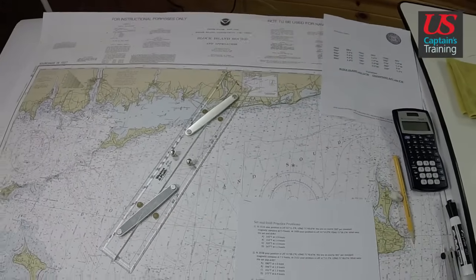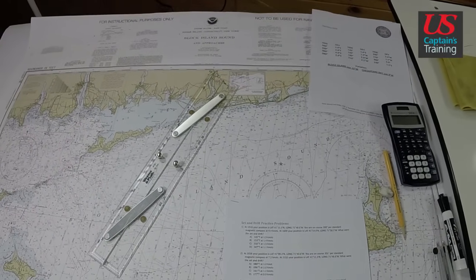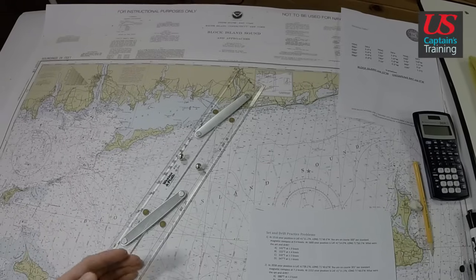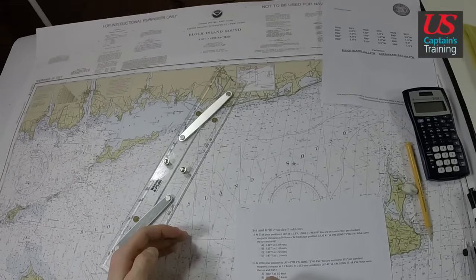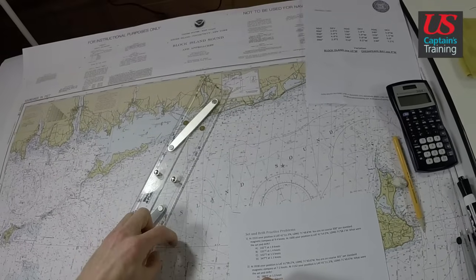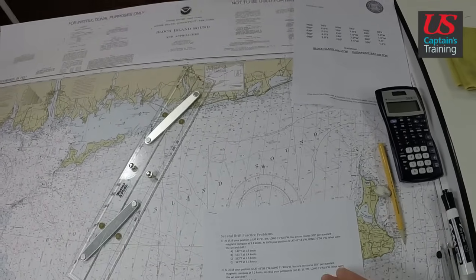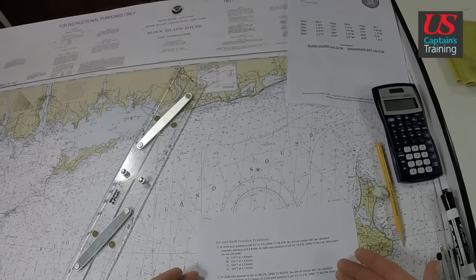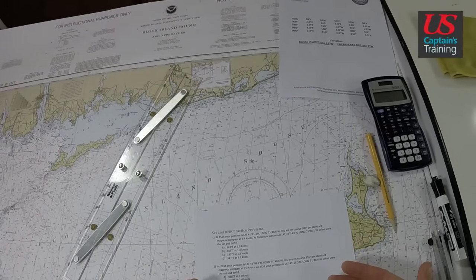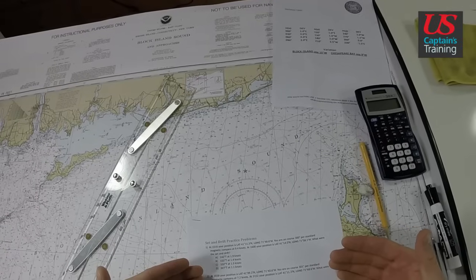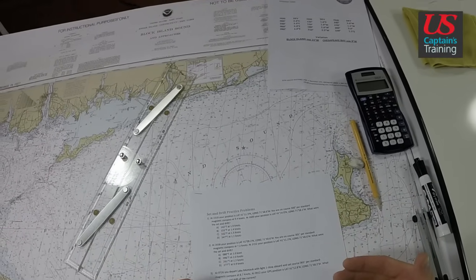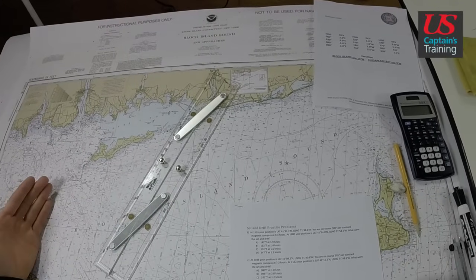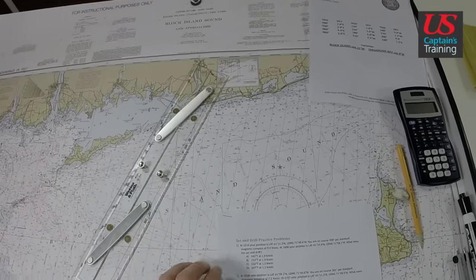In this first practice problem, we need to find the starting point, the ending point, and then plot our course, then find the distance of that course, and measure the set and the drift of our current. In this first problem, I'm going to do it in just that order. And on the second and third problem, you're going to see a bit more streamlined process where I do all the math that I need first, and then I plot on the chart.